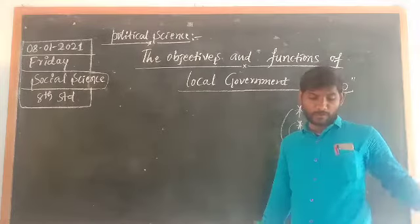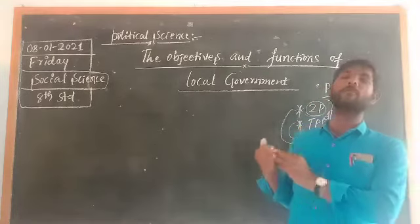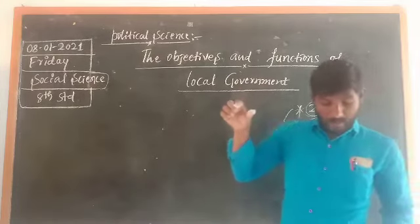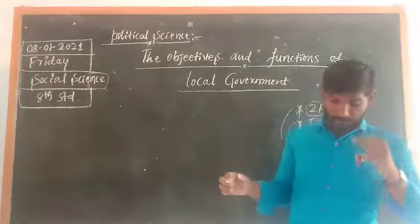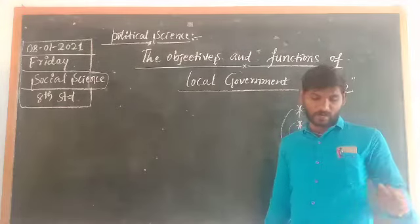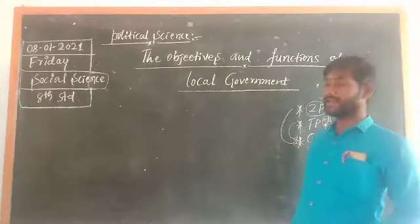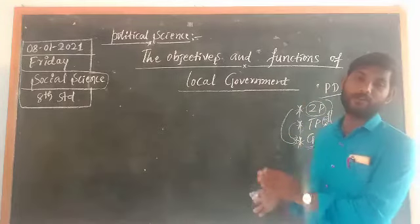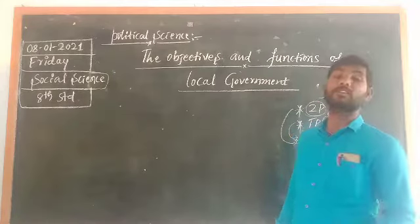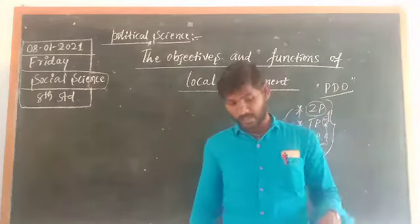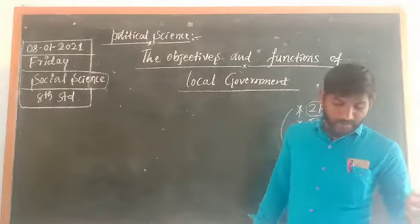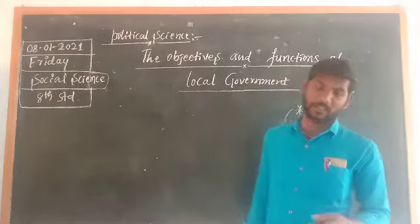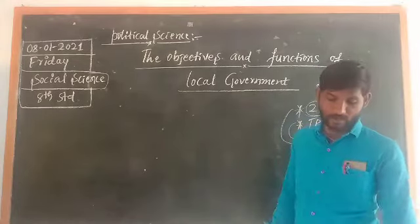The next function is to prepare the annual budget of the local body. The third function of the local government is to undertake health and family welfare programs. It is a very important thing to understand. The local government implements health and family welfare programs — that is the main important thing we have to learn here.